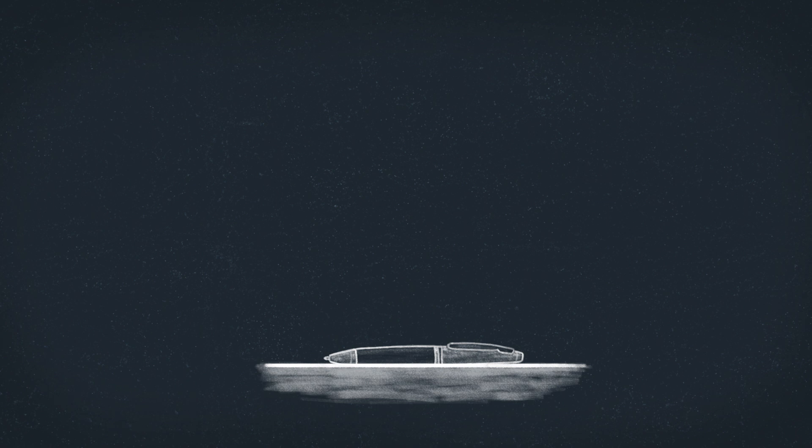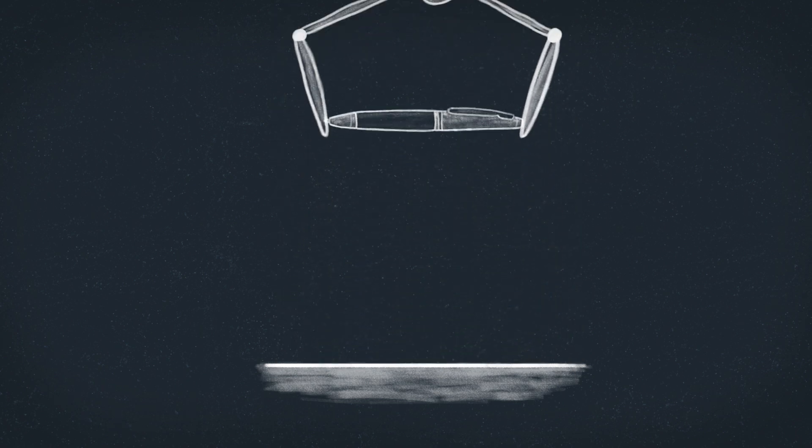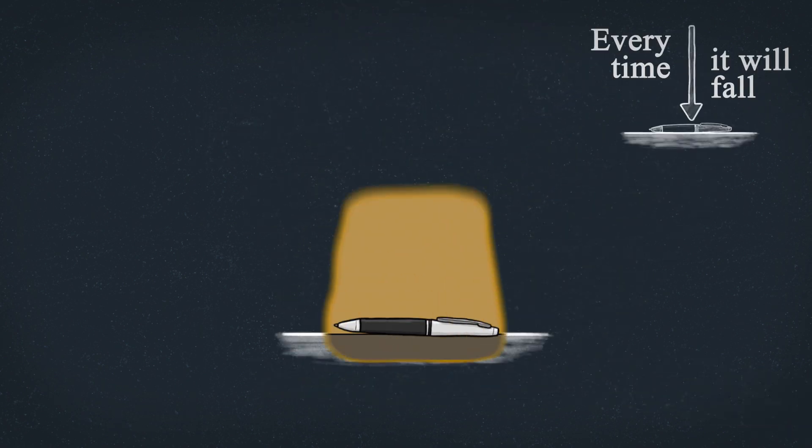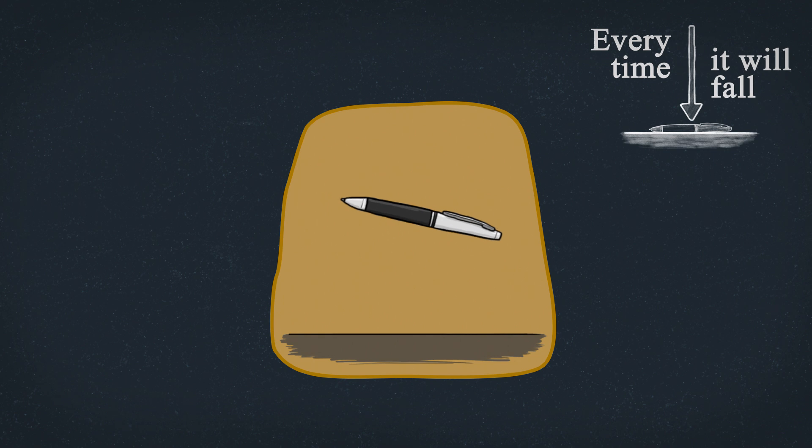But just because we can imagine something doesn't mean we can see it. Some ideas can be unverifiable. For example, the idea that every time we drop this pen, it will fall. It's falsifiable if we see the pen float or go up or something just one time. We'll see that no, the pen doesn't always fall and the hypothesis is wrong. But it's not verifiable.